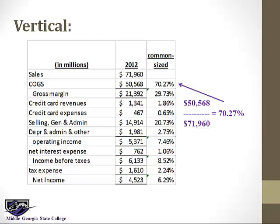Vertical analysis looks at the elements in the financial statement as a percentage of sales or as a percentage of assets. If it's in the income statement, we do it as a percentage of sales. On the balance sheet, we do it as a percentage of assets. So here, each item has that item in the numerator and sales as the denominator. The 70% there came from cost of goods sold over sales, gross margin was gross margin over sales, credit card revenues was credit card revenues over sales, and so forth.